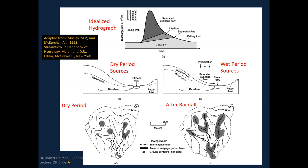Here we see some idealized hydrographs with time on the x-axis and discharge on the y-axis. Stream flow is traced in black, and we've dissected the various components. There's overland flow, a rainfall event shown as a bar graph at the top, and then response to that rainfall due to saturated overland flow. Then there's interflow — water that infiltrates just very shallow into the unsaturated zone, comes out lower down the watershed into the stream. And then there's base flow, which is essentially the groundwater contribution.